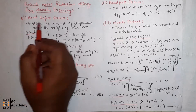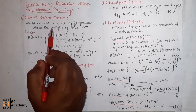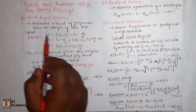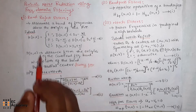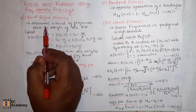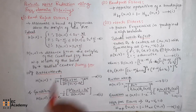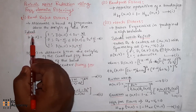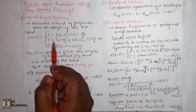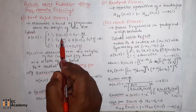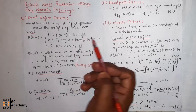First, let us see the band reject filters. The band reject filter attenuates a band of frequencies above the origin of the Fourier transform — it removes a band of frequencies above the origin. An ideal band reject filter is given as: h(u,v) = 1 for d(u,v) less than d0 minus omega by 2.